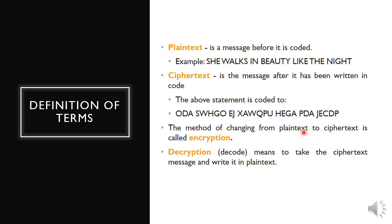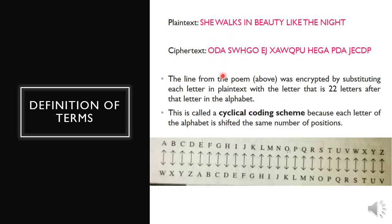The method of changing from plain text to ciphertext is called encryption, and the decoding of message from ciphertext to plain text is called decryption. The line from the poem above was encrypted by substituting each letter in plain text to the letter that is 22 letters after the letter in the alphabet. This is called a cyclical coding scheme because each letter of the alphabet is shifted the same number of positions.